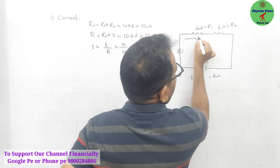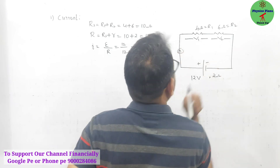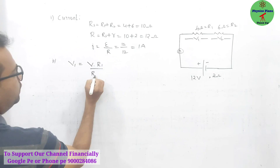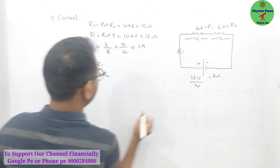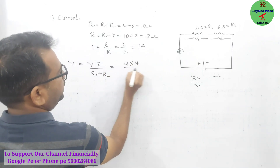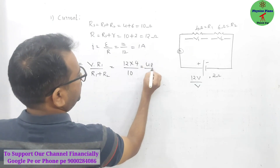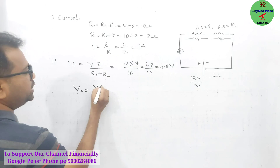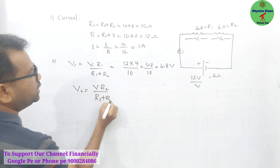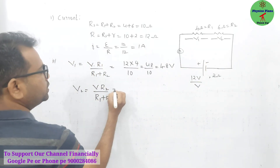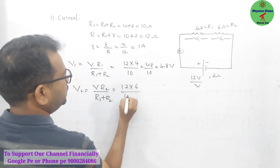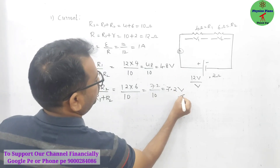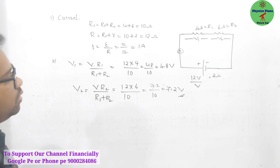EMF is 12 volt. Potential difference across r1 is v1 and across r2 is v2. Using the voltage divider: v1 = V × r1 / (r1 + r2) = 12 × 4 / 10 = 4.8 volt across r1. v2 = V × r2 / (r1 + r2) = 12 × 6 / 10 = 7.2 volt. Adding v1 + v2 = 4.8 + 7.2 = 12 volt, which matches the EMF.